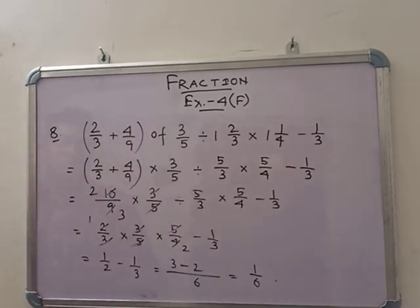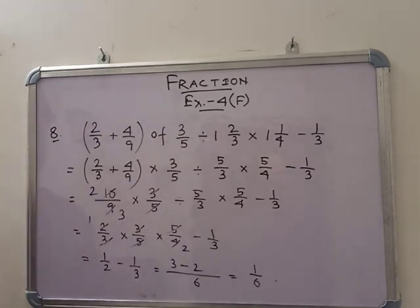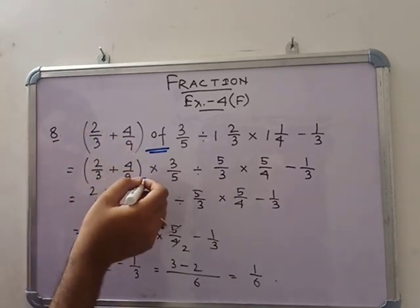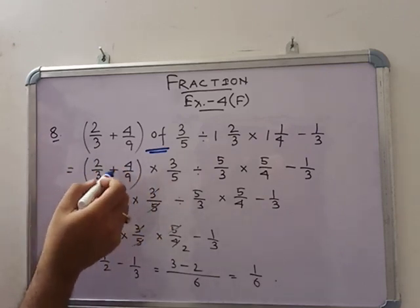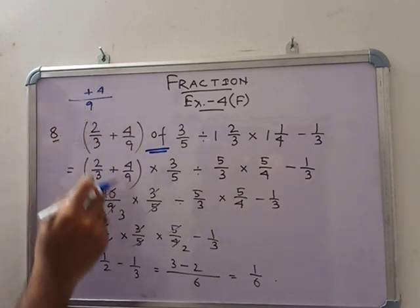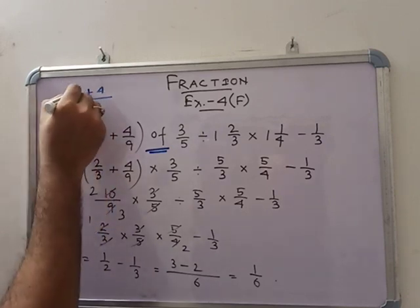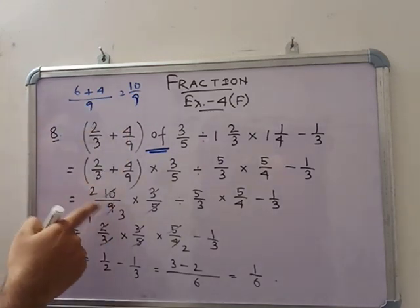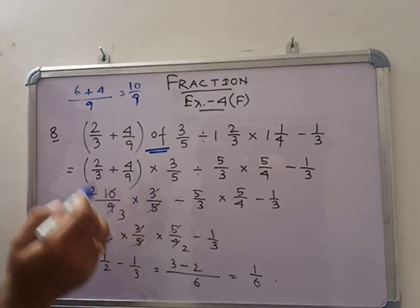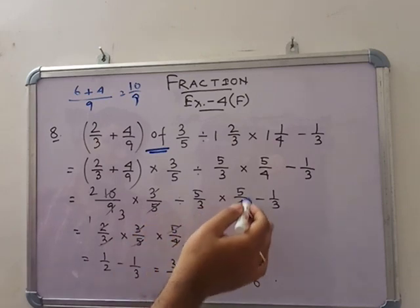In number 8, see that: 2 by 3 plus 4 by 9 of 3 by 5 divided by 1 of 2 by 3 into 1 of 1 by 4 minus 1 by 3. We know firstly you have to do the work of 'of'. You have to do the addition of this fraction first because otherwise we don't get the fraction. So: 4 plus 3 is 7; 9 divided by 3 is 3, 3 into 2 is 6 — that means 10 by 9. So 10 by 9 into 3 by 5: 5 into 2 is 2, 3 into 3 is 9, so 2 by 3. Divide by 5 by 3 into 5 by 4 minus 1 by 3.